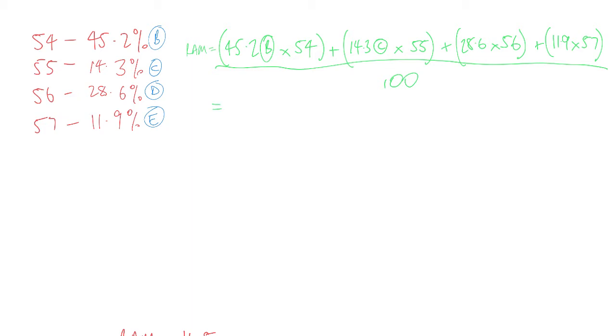So you do that in your calculator. We do B times 54, which happens to be 2442.9, and I'm going to save that as B. I'm going to overwrite that number. Then I'm going to do C times 55, which would be equal to 785.7, and I'm going to save that as C.